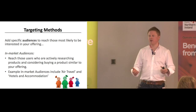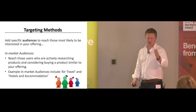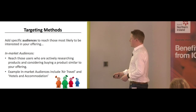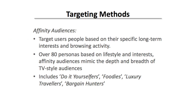Google categorises people as luxury travelers, avid investors, equestrians, or people interested in hotels and accommodation. There are also affinity audiences, which allow Google to base targeting on people's long-term interests. Moving away from in-market, which is 30 days, affinity works over about 12 months. There are 80 different personas based on lifestyle and interest that map TV audiences to put people into longer-term pigeonholes.